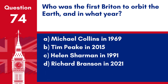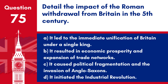Question 74. Who was the first Briton to orbit the Earth, and in what year? a. Michael Collins in 1969. b. Tim Peake in 2015. c. Helen Sharman in 1991. d. Richard Branson in 2021. Answer: c. Helen Sharman became the first Briton to orbit the Earth in 1991, when she participated in the Soviet space mission to the Mir space station.